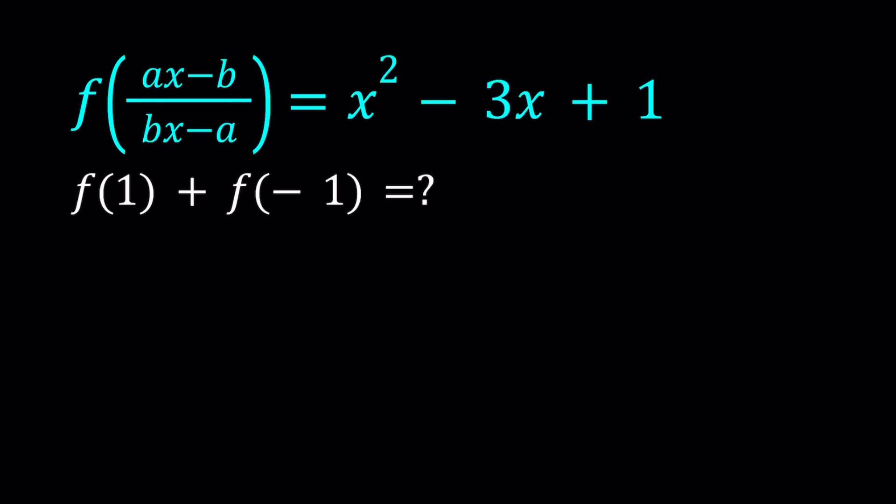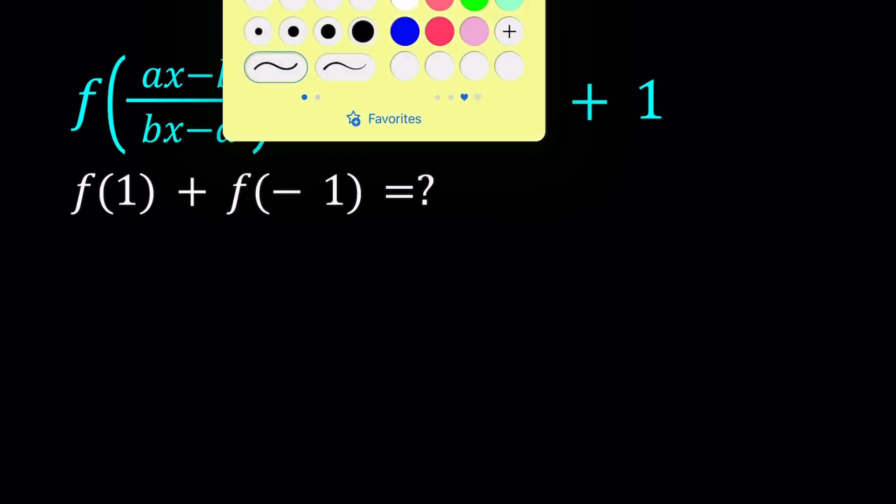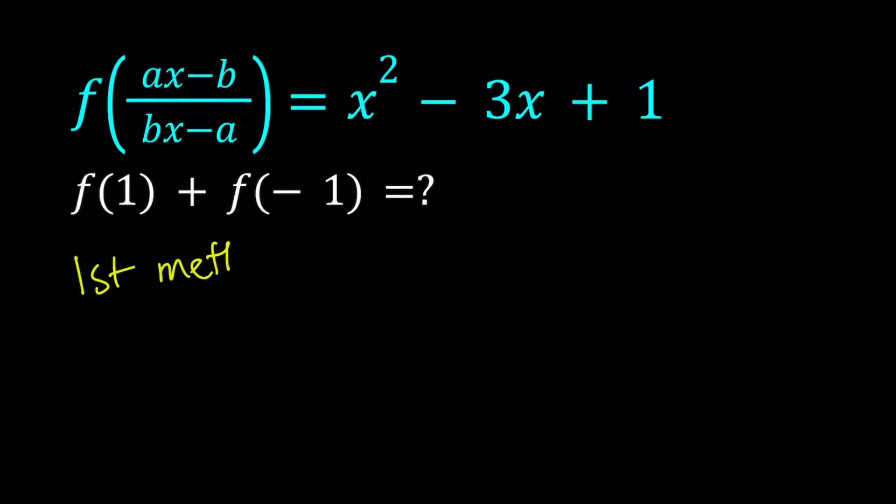I'm going to be presenting two methods. The first method is just going to be a little bit more painful, just to introduce the idea. Sometimes one of the methods could look like an overkill, but the idea is to present different approaches. We do need some conditions like bx minus a should not be equal to zero, so certain things need to be satisfied for a and b in order for this function to be well defined.